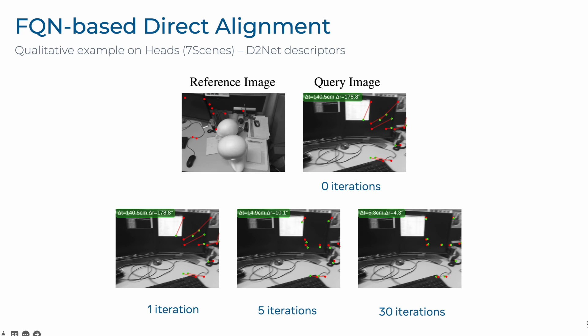Here is a qualitative visualization of this algorithm in practice, on an example where we have a large camera baseline initialization obtained with D2Net descriptors. While the first PNP plus RANSAC results show a poor camera pose estimate, after several iterations the 3D descriptors are updated using FQN to bridge this viewpoint discrepancy and lead to much better results.